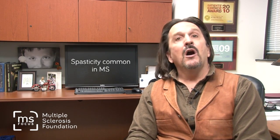What is spasticity? Spasticity and spasms are common in multiple sclerosis. Spasticity and spasms are the result of an injured central nervous system — the brain or the spinal cord.